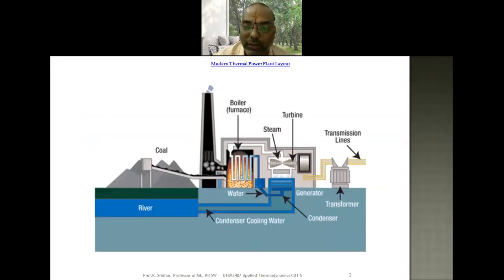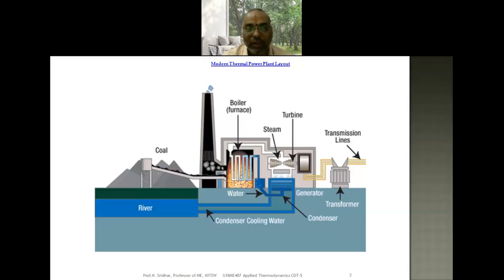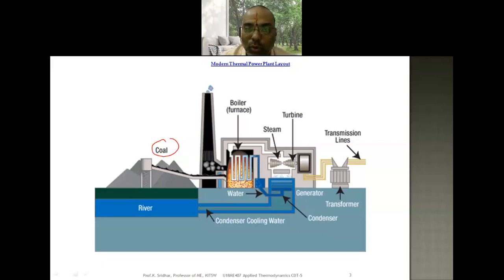The thermal power plant layout is basically like this. The coal is taken from the coal bunkers — that is, there is a coal handling plant or fuel handling plant which serves as the storage area for coal. From this, various conveyors and handling devices carry the coal from the coal handling plant to the thermal power plant, using conveyor belts.